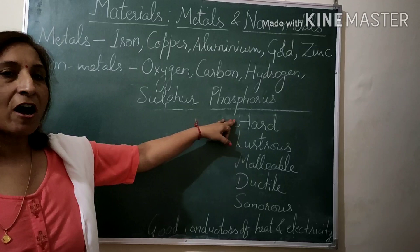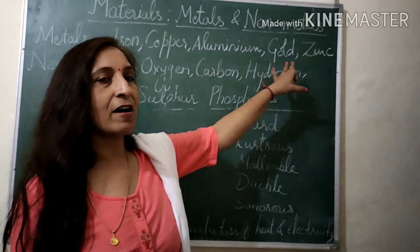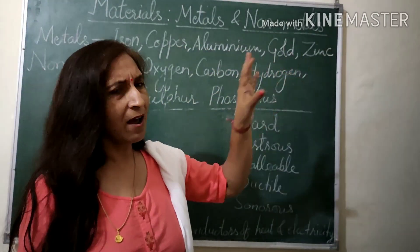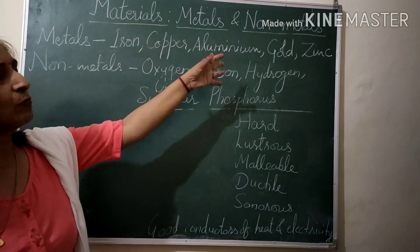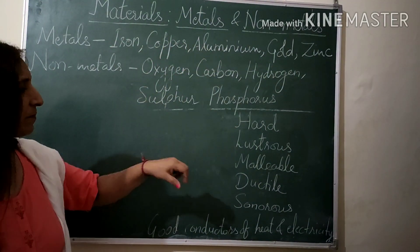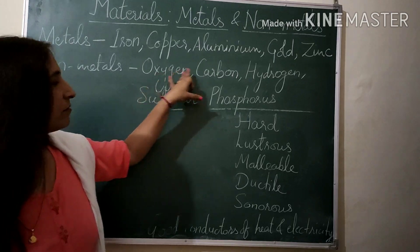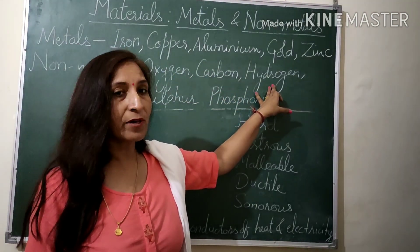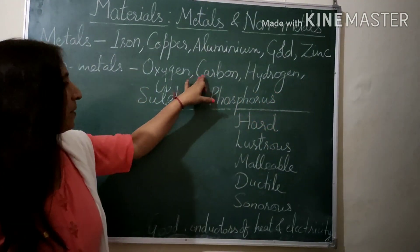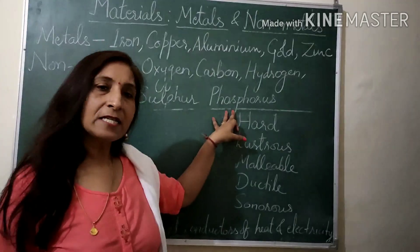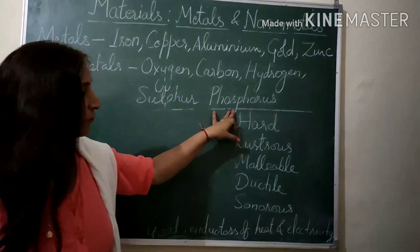Metals are hard — all metals are solid and hard substances. Non-metals like oxygen and hydrogen are gases, so they cannot be hard. Carbon, sulfur, and phosphorus are solid non-metals, but they are soft.